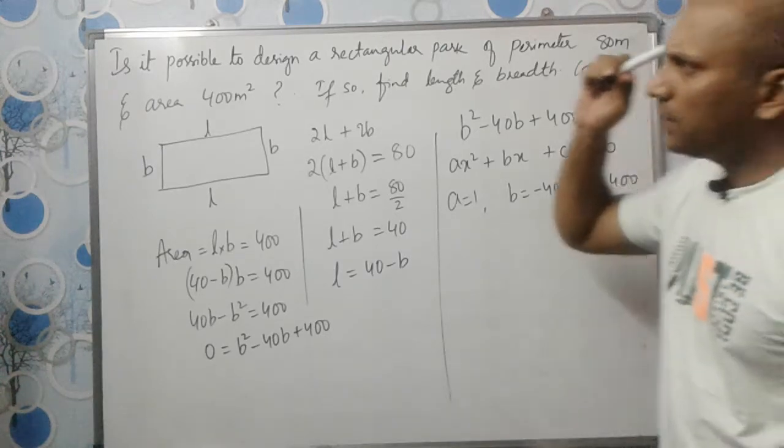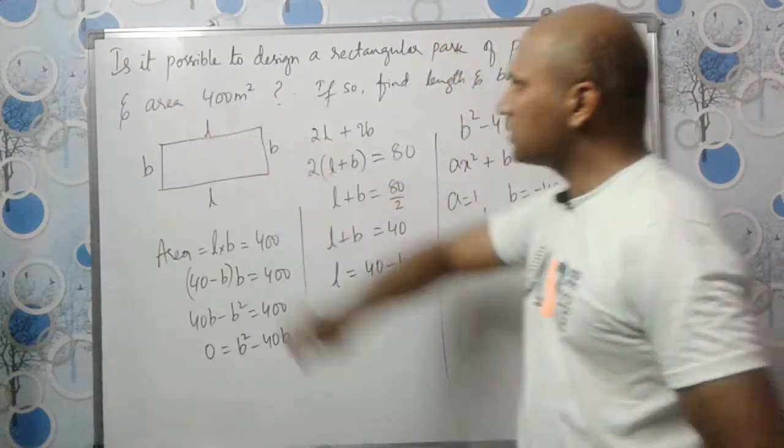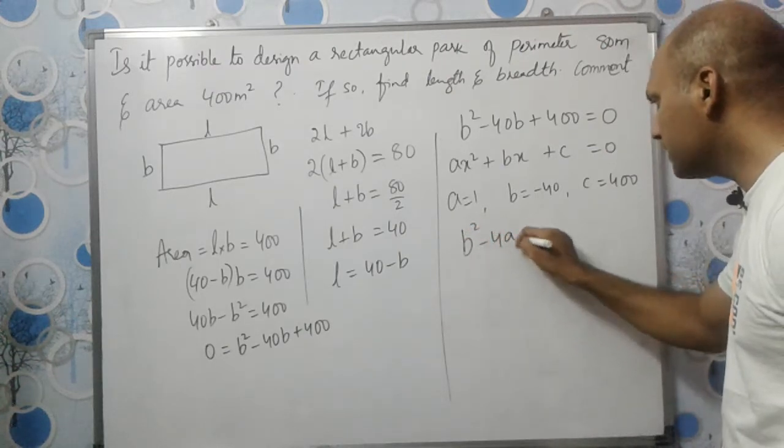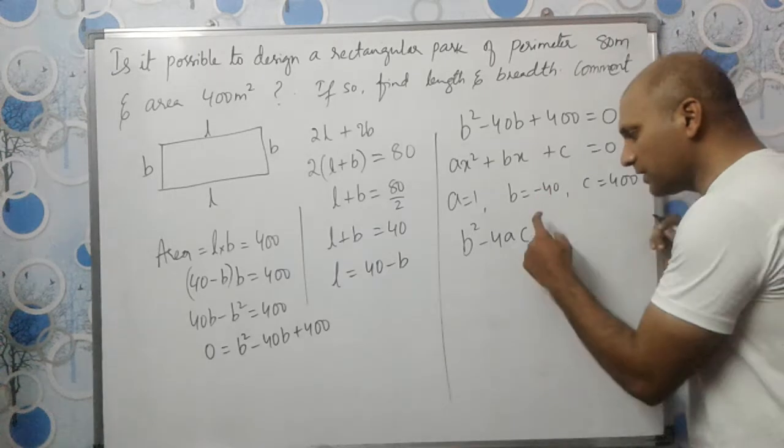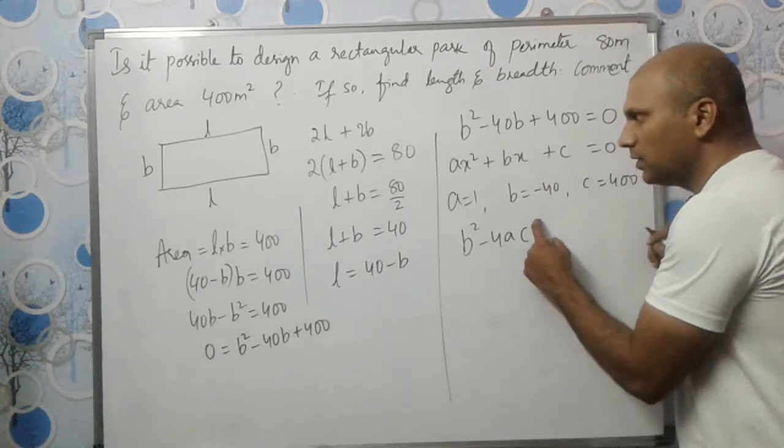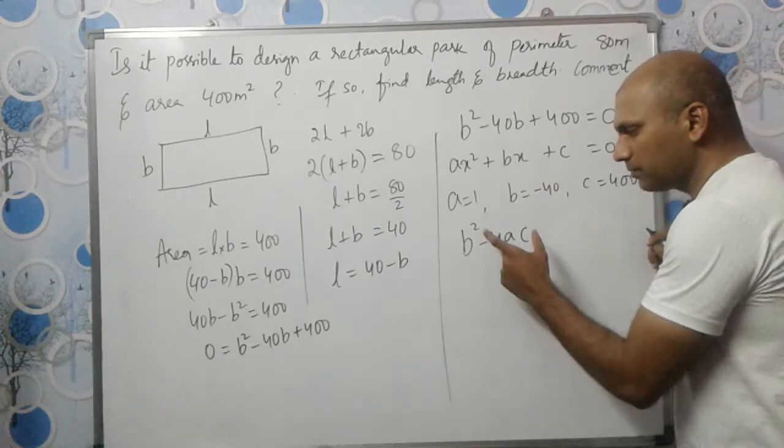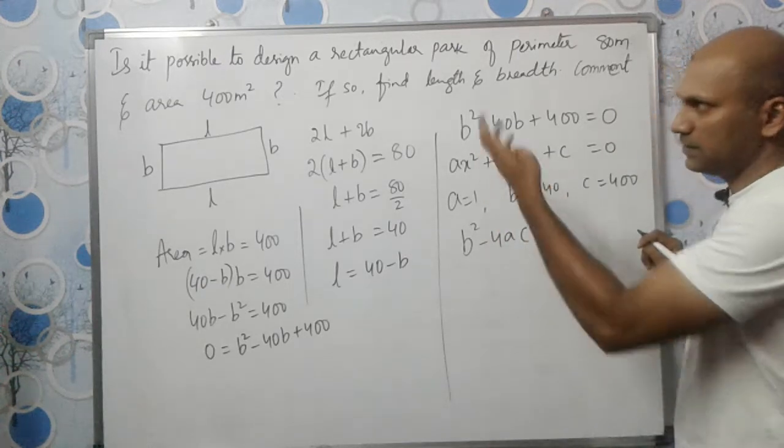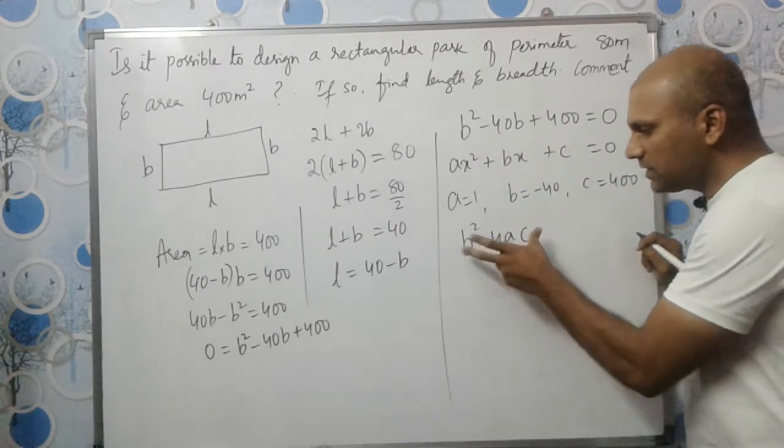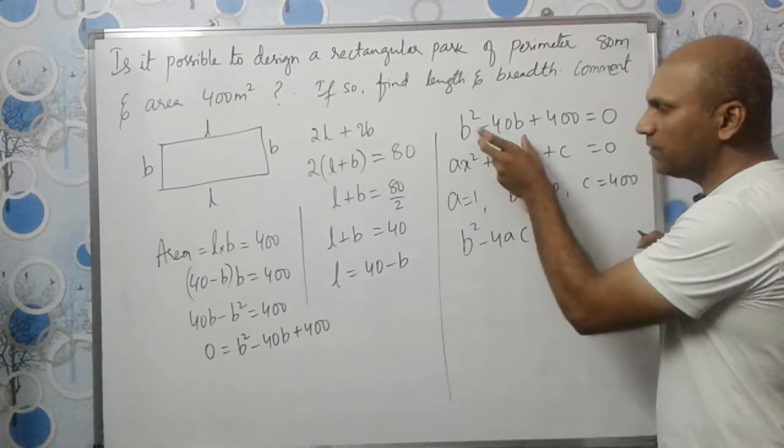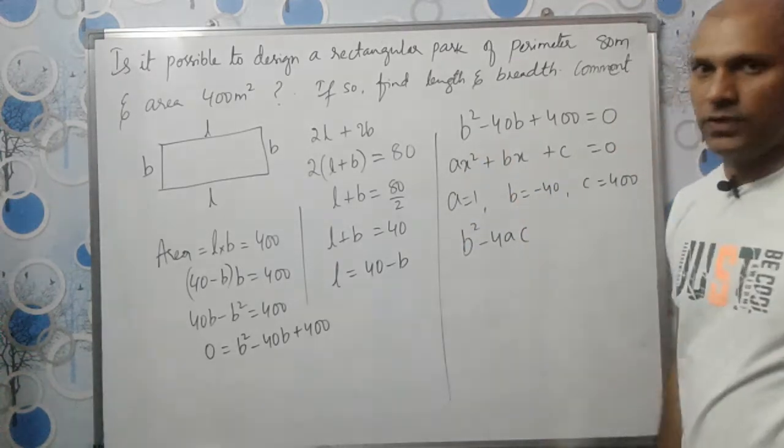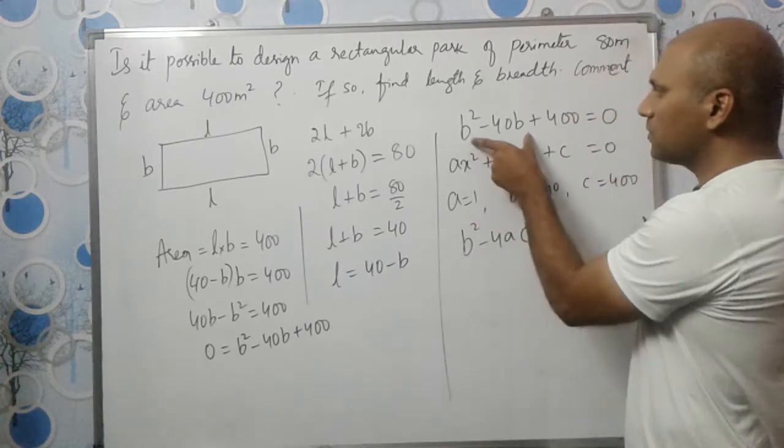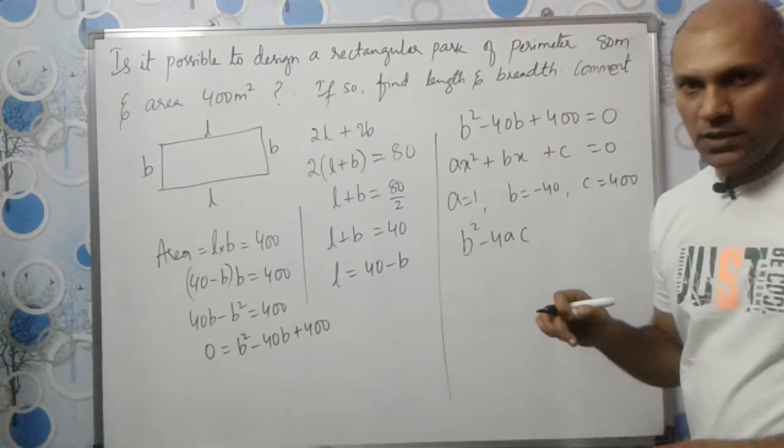He is asking us to check whether it is possible or not, so first we need to find the discriminant B²-4AC. If this is greater than 0, the equation will have two different roots and the situation is possible. If this equals 0, it will have two same roots and the situation is still possible. But if this is less than 0, it will have imaginary roots and the situation is not possible.